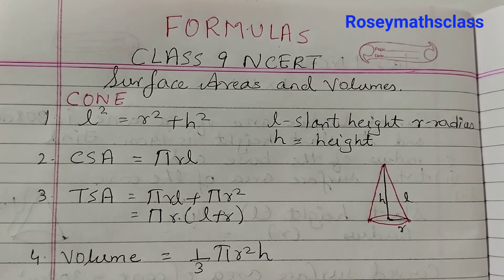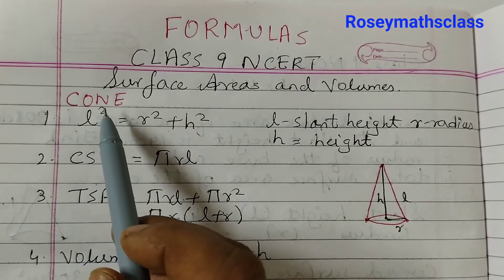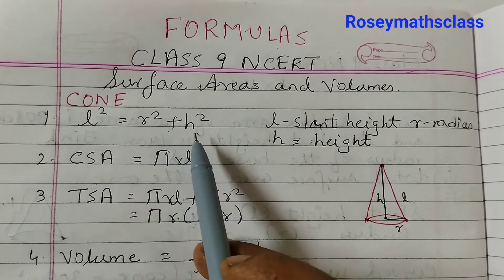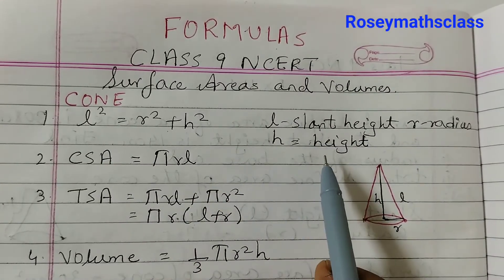In this video we shall quickly go over the formulas of surface areas and volumes. For the cone, L squared is equal to R squared plus H squared. L is the slant height, R is the radius, and H is the height of the cone.